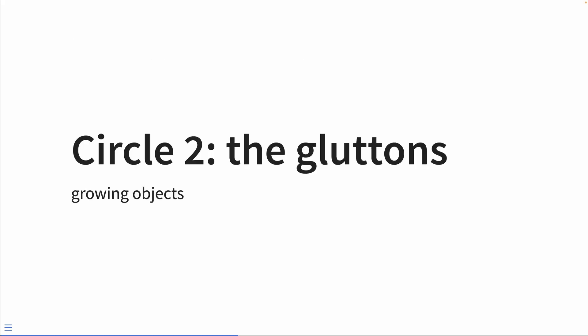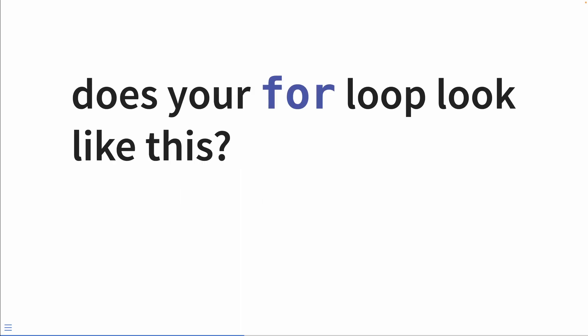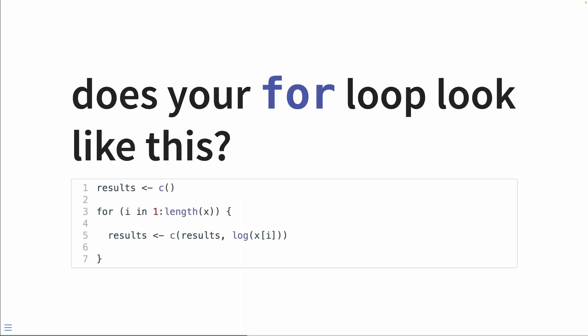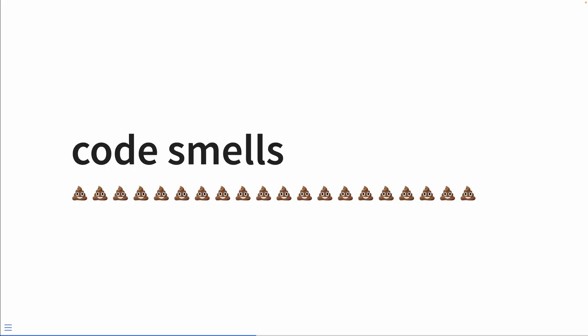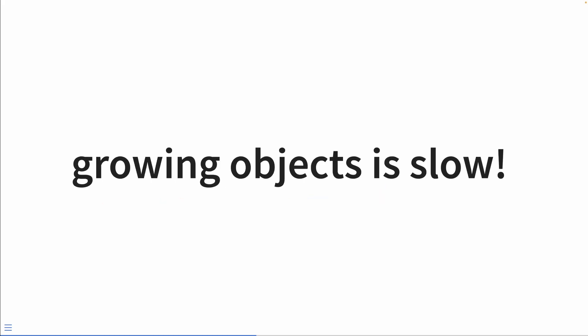The second circle of hell is where I think most people go really, really wrong. Burns' second circle of hell is devoted strictly to growing objects. Does your for loop look something like this — where you create an empty vector outside the for loop, and then inside the loop, you fill it up? This smells like bad code. Loops like this are why, in my opinion, for loops have so much shade thrown at them. Growing objects is slow and hogs memory.